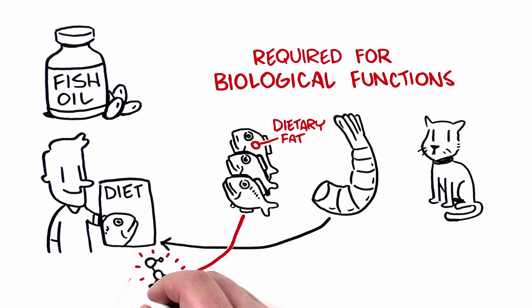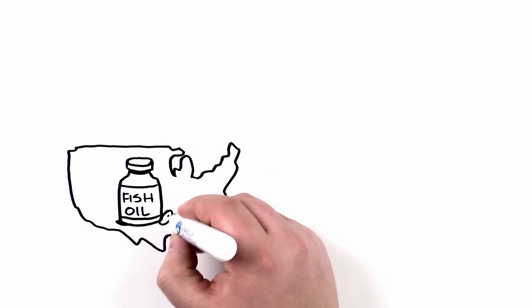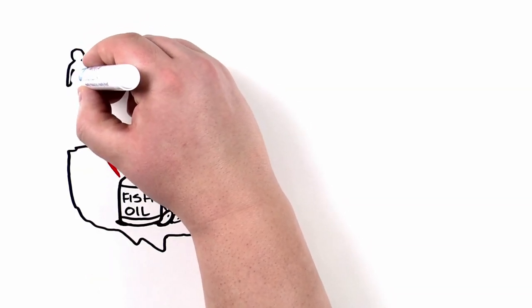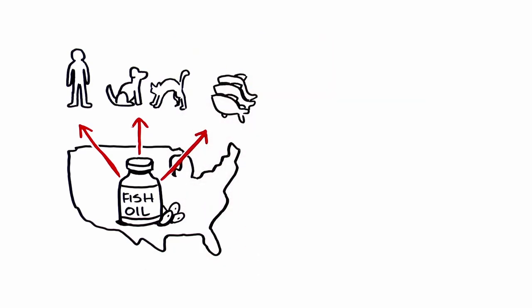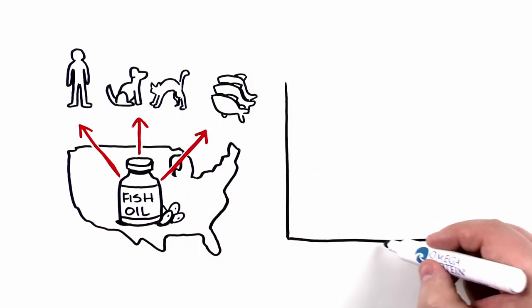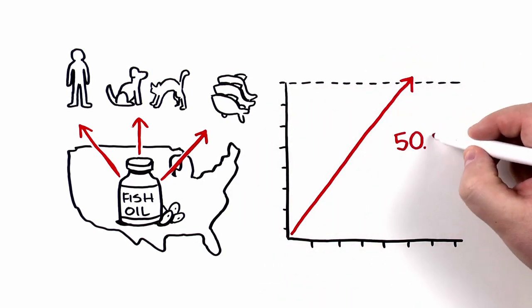Currently, the primary purpose of US fish oil is to provide necessary and essential nutrients to humans, pets, and farmed fish. Global aquaculture production has skyrocketed almost 30-fold since 1970 and surpassed 50 million tons in 2012.